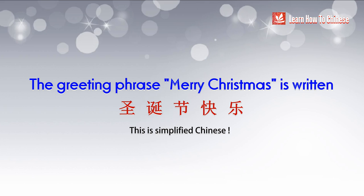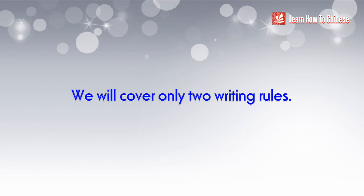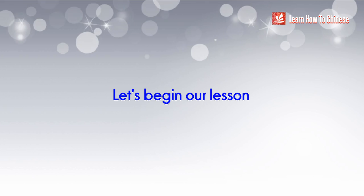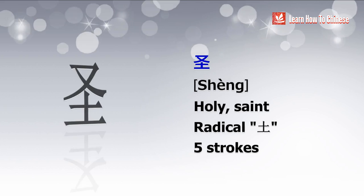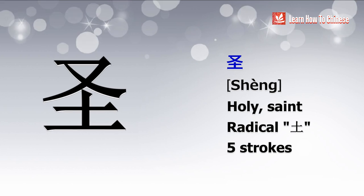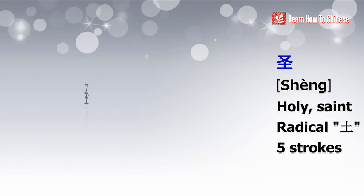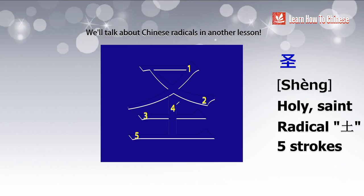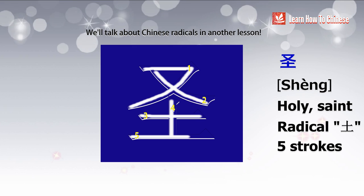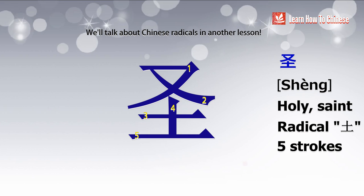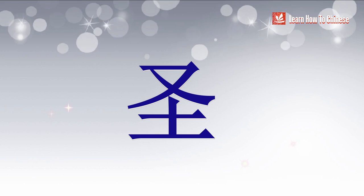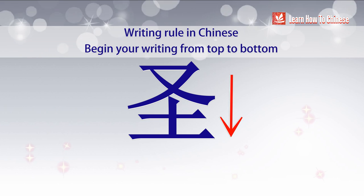Since our focus is on how to write the characters, in this lesson I will only cover two writing rules in Chinese. The first character is 圣. The radical of this character is 土, which means Earth in English. A radical helps a reader to discover the deeper meaning of each Chinese character, and each character has one radical. Our first writing rule is: always start your writing from top to bottom.